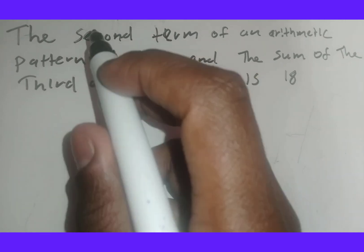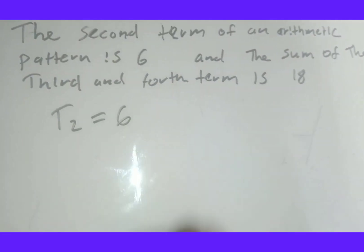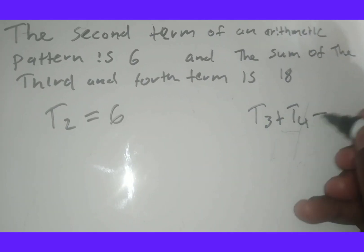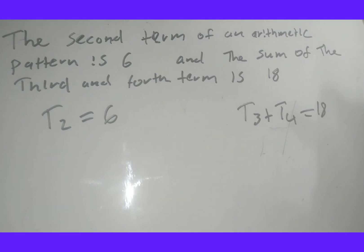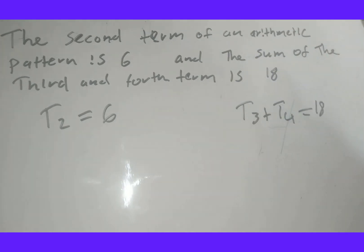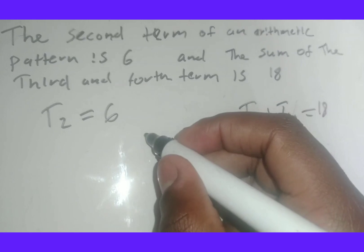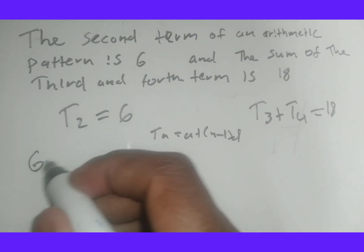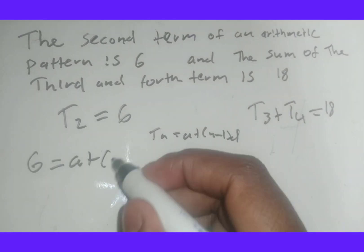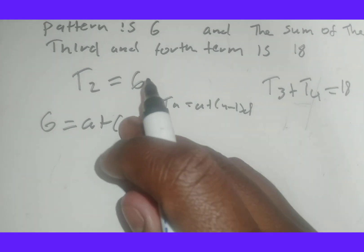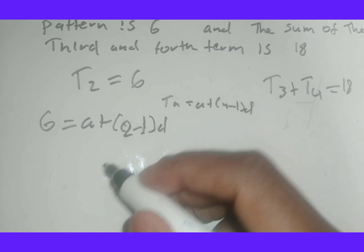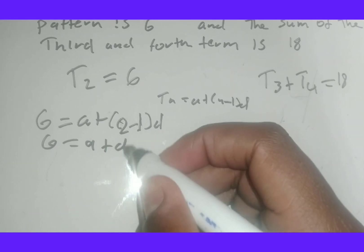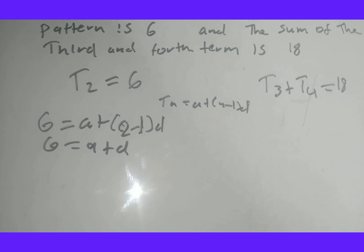The second term equals 6 means t2 equals 6. The sum of the third and fourth terms equals 18 means t3 plus t4 equals 18. Using the general formula tn equals a plus n minus 1 times d, translating t2: 6 equals a plus 2 minus 1 times d, so 6 equals a plus d. That's equation 1.